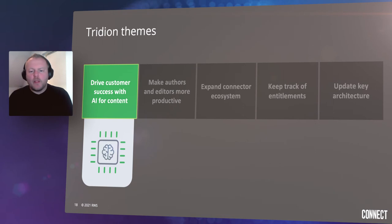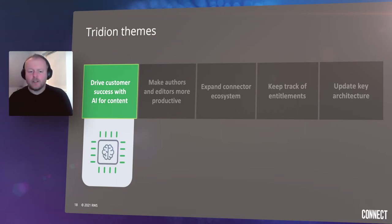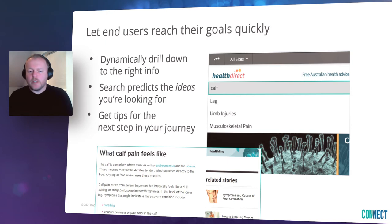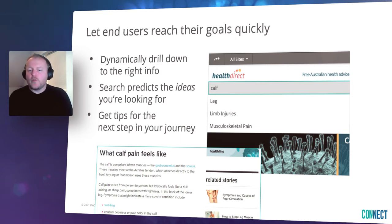The first theme — drive customer success with AI for content — covers how Tridion will allow you to increase conversions and drive customer success with content findability scenarios and smart tagging suggestions. In regards to letting end users reach their goals quickly, we will focus on three main features. Dynamic search filters, also known as facets, will allow end users to narrow down on search results and help them find the content they were looking for more easily. Search suggestions quickly connect search terms the user entered with relevant concepts that the content is classified with, to further improve content findability.